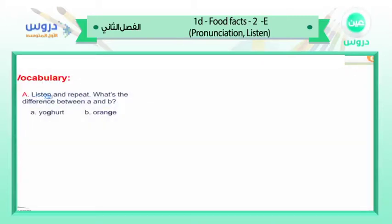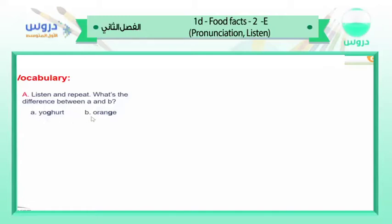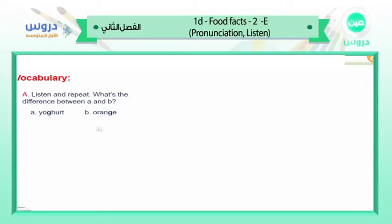Vocabulary, part A — listen and repeat. What is the difference between word A and word B? So A is 'yogurt' — yogurt — and B is 'orange' — orange. What do you think is the difference between these two sounds? I'm talking about these two bold letters, can you see them?